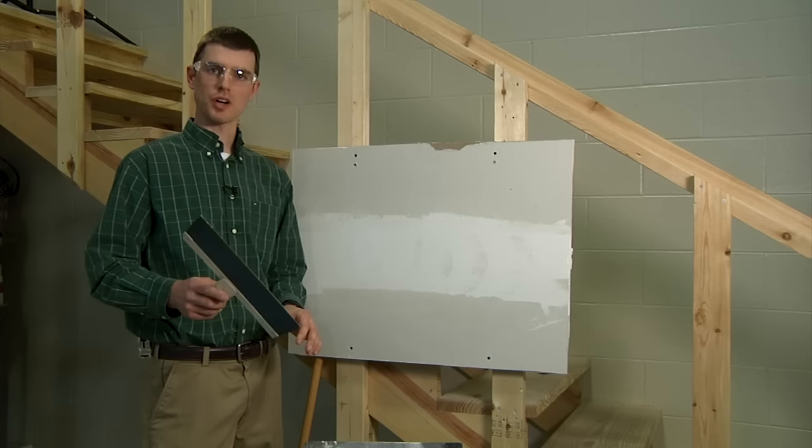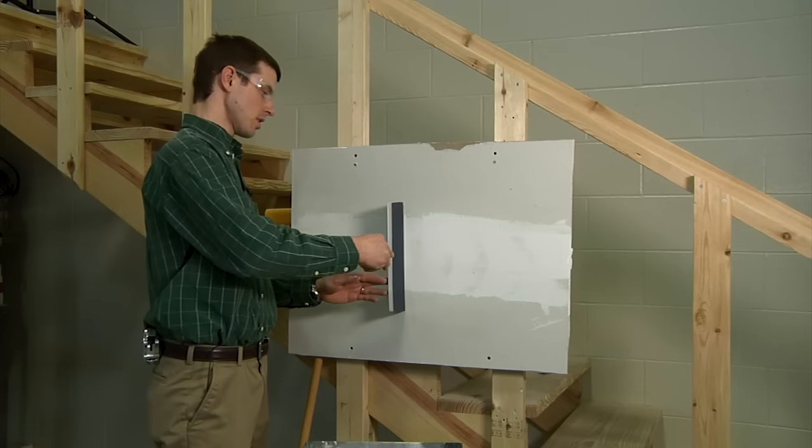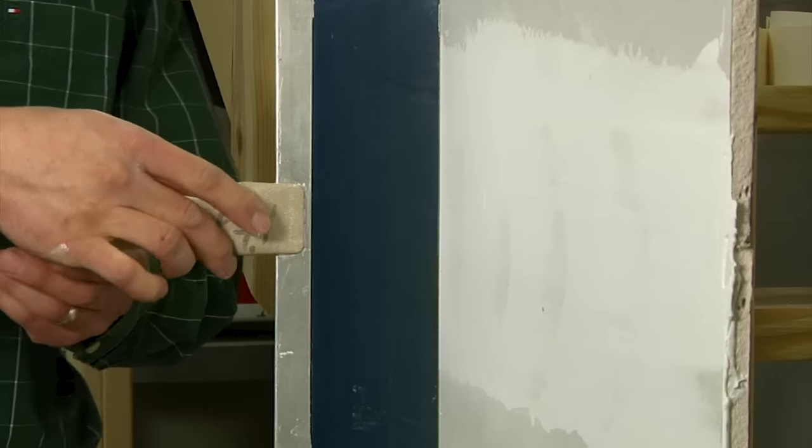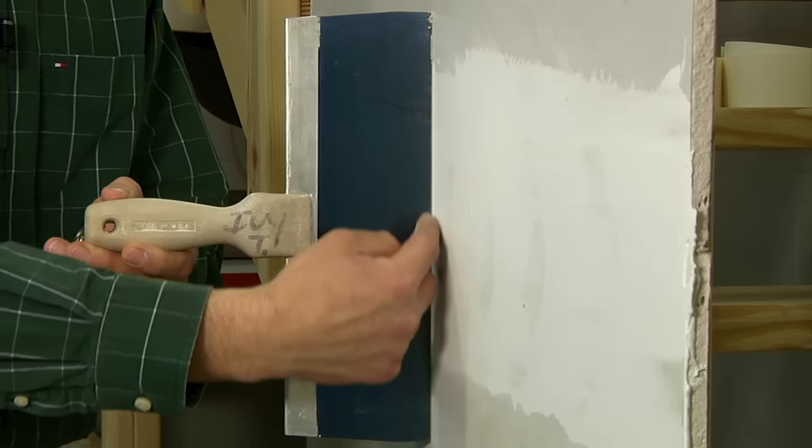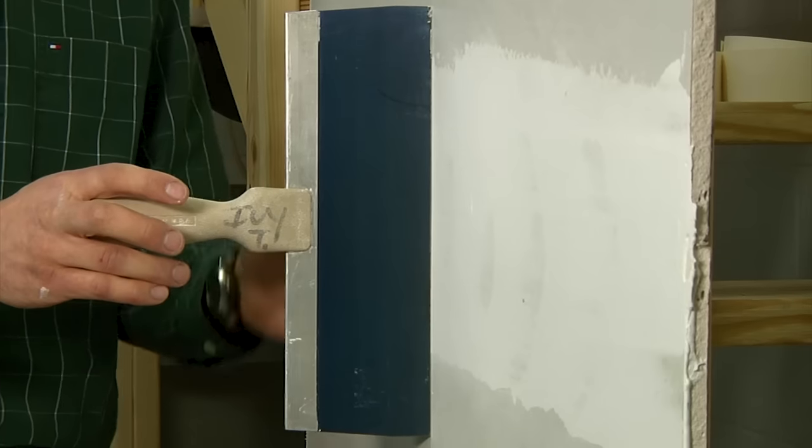Before we start applying compound, what I like to do is take this knife and place it perpendicular to the joint. I look along this edge of the knife and make sure that there's no gap. As you can see, this is very level.